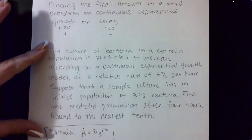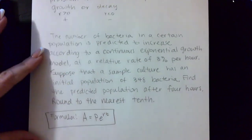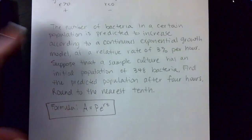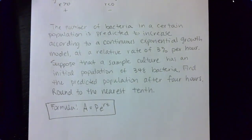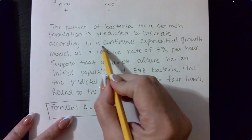The question we have here is: the number of bacteria in a certain population is predicted to increase according to a continuous exponential growth model at a relative rate of 3% per hour. Suppose that a sample culture has an initial population of 348 bacteria. Find the predicted population after four hours and round to the nearest tenth.